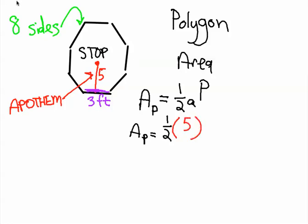And then we know also from earlier that the perimeter, the way you find the perimeter is you multiply the number of sides. Earlier we said that the number of sides was eight, and you multiply that by how long each side is, three feet.